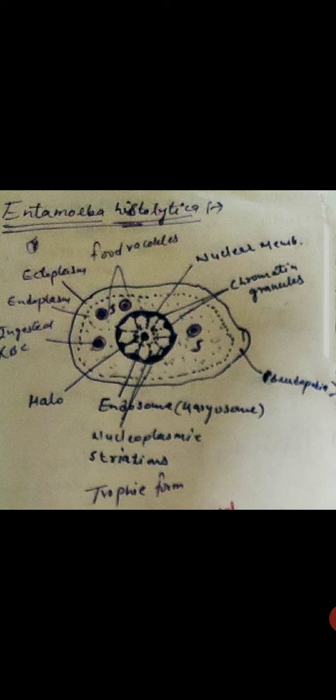The nucleus size is 4 to 6 microns. It is bound by a nuclear membrane whose inner surface is encrusted with fine chromatin granules. You can see clearly here the nucleus. In the center, there is a dot-like structure, the endosome. There is a clear area around the endosome called the halo.